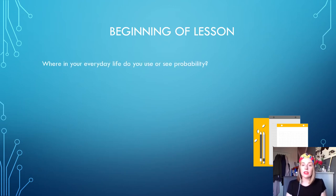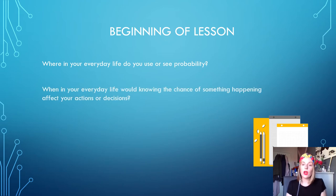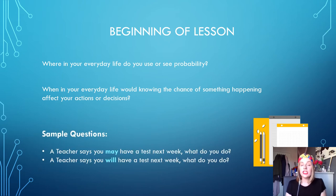I will then begin by discussing with the class where in their everyday life do they see or use probability. The phrasing of the statement may cause confusion, so I would offer an alternative which is, when in your everyday lives would knowing the chance of something happening affect your actions and decisions? Now this should open up a classroom-based discussion and some sample examples I would give would be: a teacher says you may have a test next week, what will you do? A teacher says you will have a test next week, what will you do?